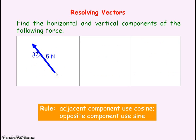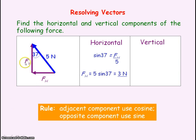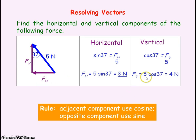If we had a force of 5N acting at an angle of 37 degrees from the vertical, the horizontal component is to the left and the vertical component is upwards. To get the horizontal component — because it's opposite to the angle 37 — we use the sine term: sin(37) = FH / 5N, so FH = 5 sin(37) = 3N. The vertical component FV is adjacent to the angle, so we use the cosine term: cos(37) = FV / 5N, so FV = 5 cos(37) = 4N.